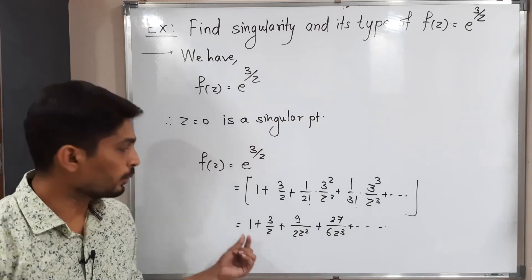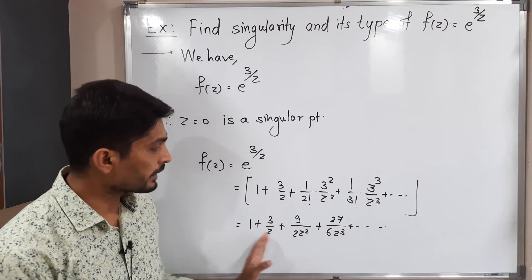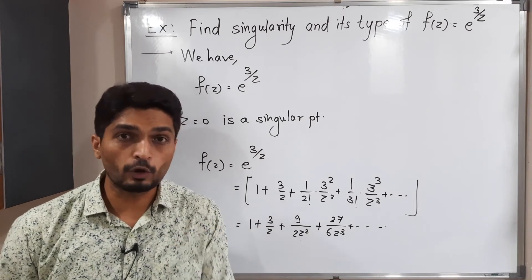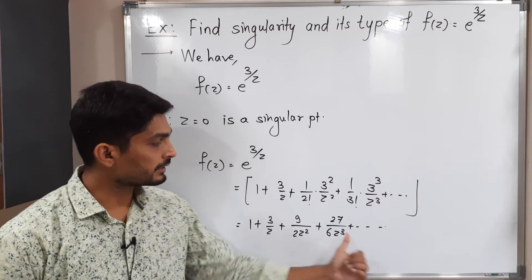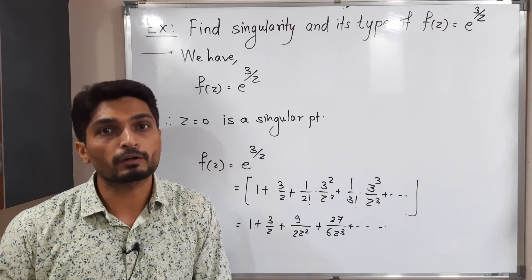As you can see, only for the first term, there is no z in the denominator—that is the analytic part. For the remaining terms, z lies in the denominator. All z's and its powers are in the denominator, so that is the principal part of the Laurent series.